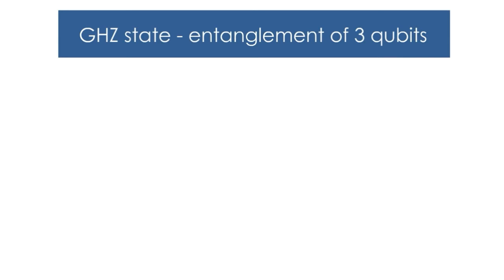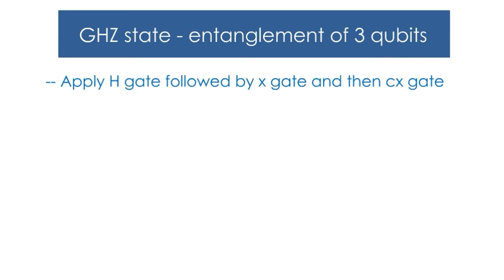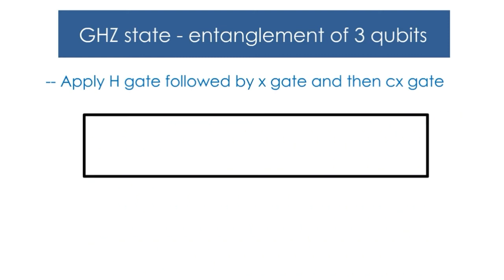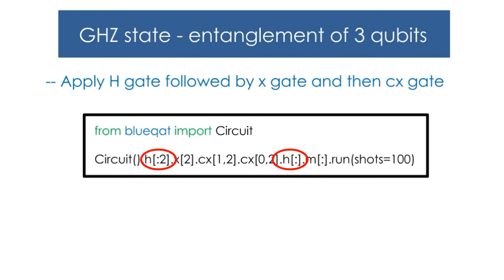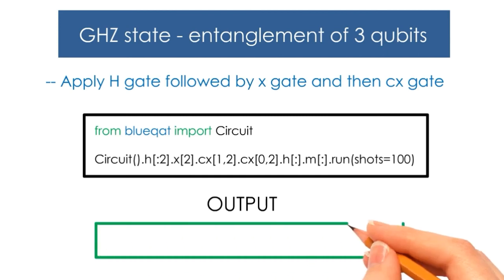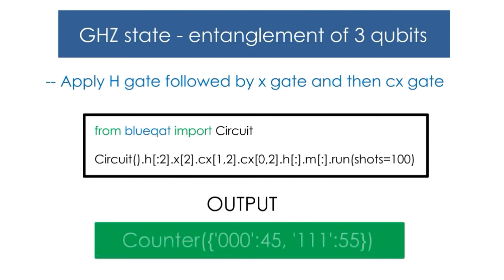Now let us move on to GHZ states, which is the entanglement of 3 qubits. Here, we use the Hadamard gate followed by the CX-gate circuit. As you can see in the code, first we add the H-gate followed by the CX-gate. If you run this code, we will get this as our output. In the GHZ state, we have only two answers: 000 and 111.